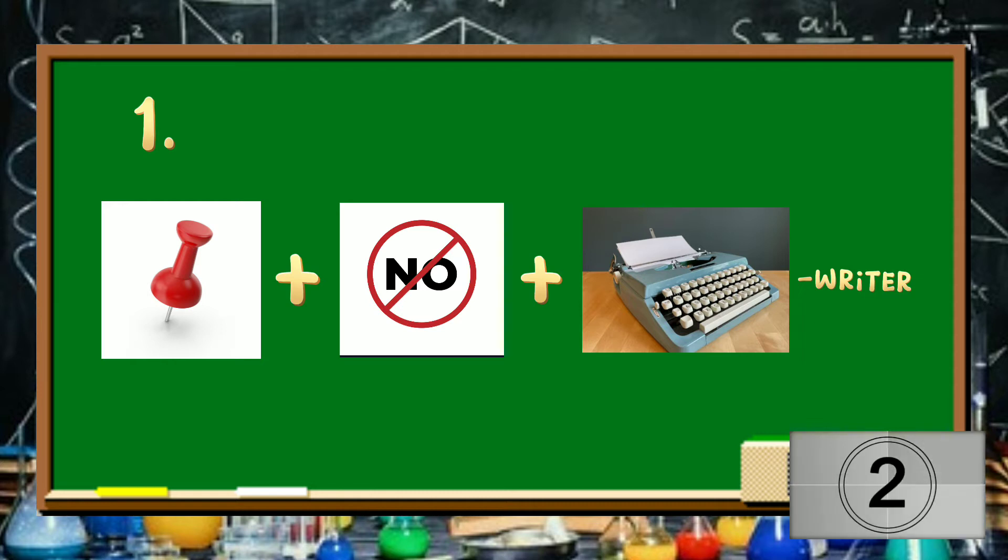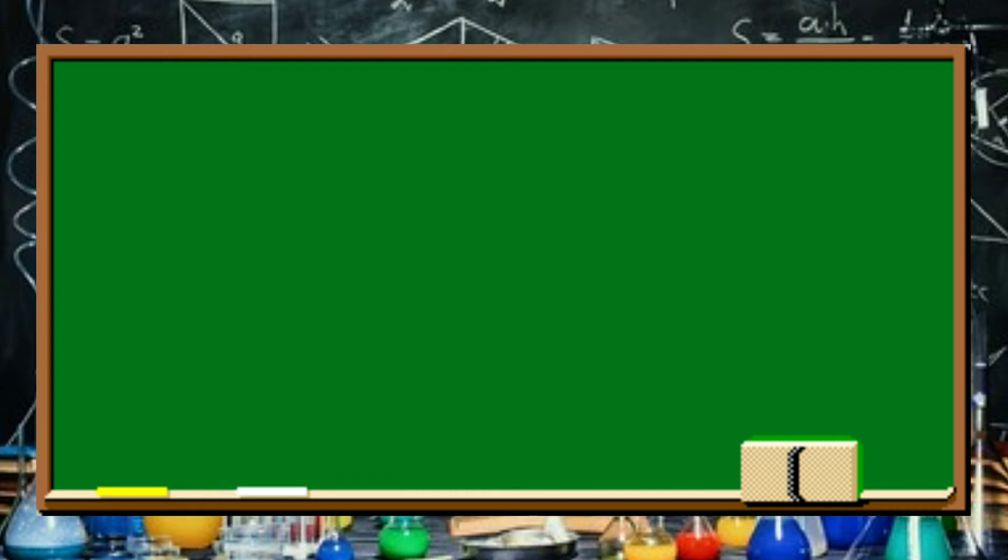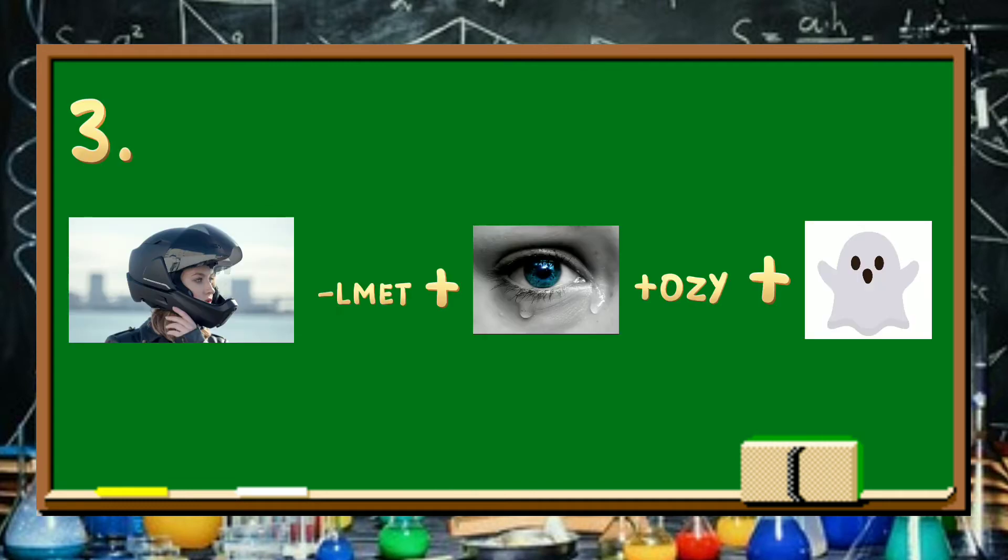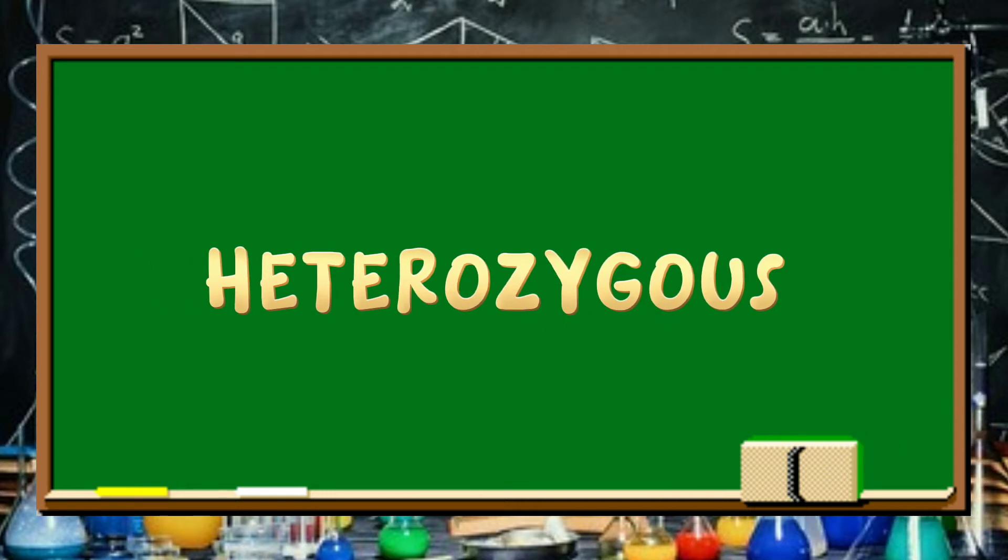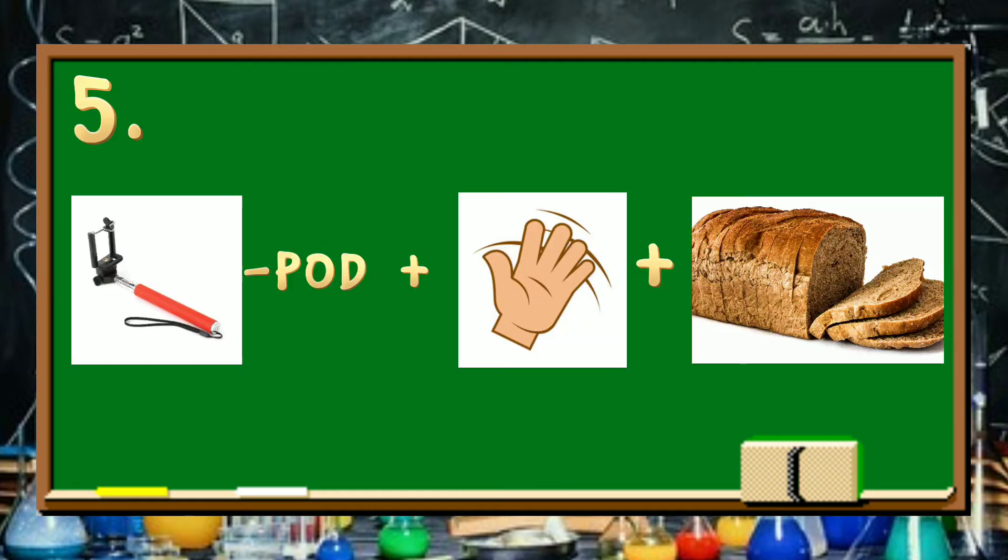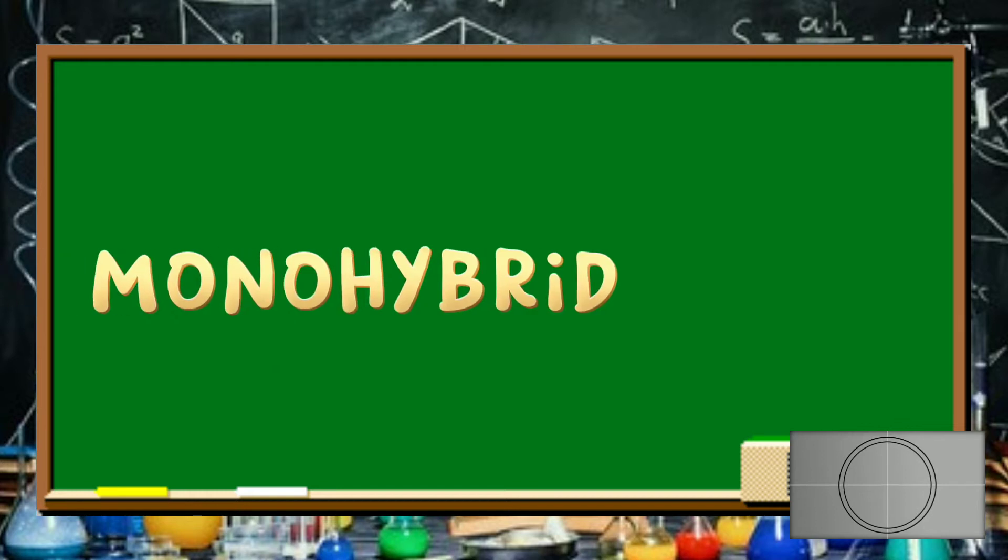What's the word? The answer is phenotype. Number 2. Can you guess the correct word? It's genotype. What's the word? Heterozygous. What's the word? Dominant. What's the word? Monohybrid.